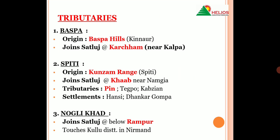Ab let's see what are the tributaries of Satluj. Sabse pehli tributary hai Baspa, jiska origin hota hai Kinnaur district ki Baspa Hills se, aur yeh Satluj ko join karti hai Karcham mein, jo ki Kalpa ki nazdik hai. Agli nadhi hai Spiti, jiska origin hota hai Spiti ki Kunzim Range se, aur yeh Satluj ko join karti hai Khab mein, near Namgya. Spiti ki major tributaries hain Pin nadhi — bahot important nadhi — aur Pin ke alawa Tegpo aur Kabziyan yeh bhi iski tributaries hain. Spiti nadhi ke kinaare Hansi aur Dhankar Gompa yeh dono bahot major settlements hain.